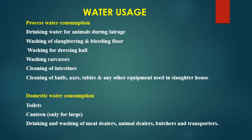The places where water is used in a meat plant include: drinking water for animals in the lairage and holding pen; washing of slaughtering and bleeding floor; washing of dressing hall; washing carcasses; cleaning of intestines; cleaning of knives and other instruments and machinery in the slaughter hall; domestic water for worker toilets; canteen use in large meat plants; and drinking and washing for meat dealers, butchers and transporters.